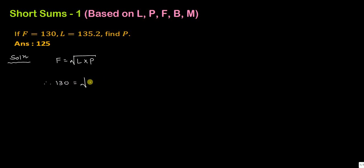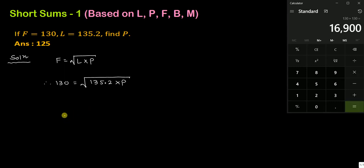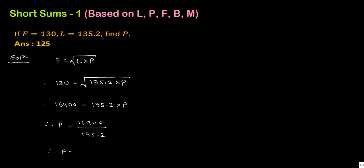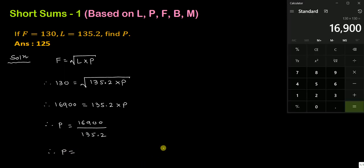So 130 equals under root of 135.2 into Paasche. Now squaring both sides: 130 squared equals 16900. Therefore 16900 equals 135.2 into Paasche. Therefore, Paasche's index number is equal to 16900 divided by 135.2. We will get Paasche's index number equal to 125. This is our answer.